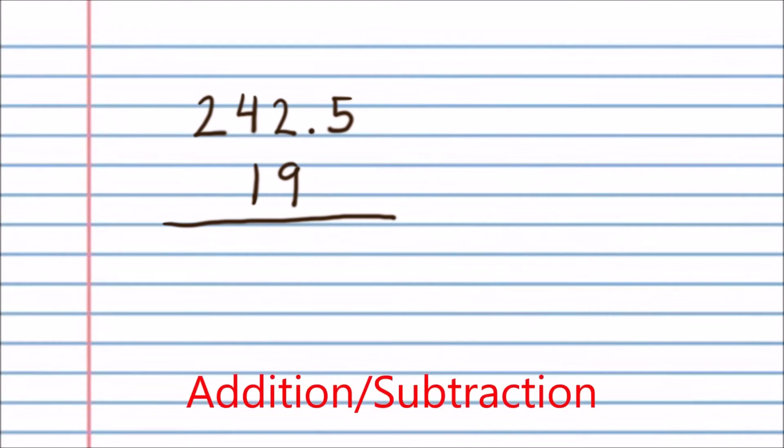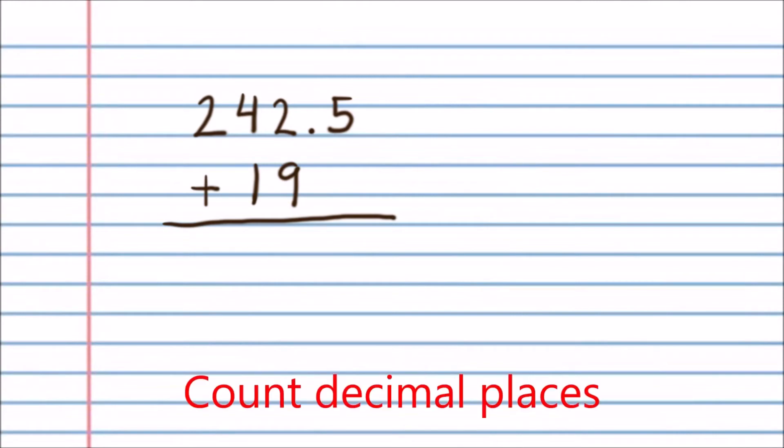When you want to add or subtract two numbers, the rule is different. Instead of counting up how many significant figures the two numbers have, you instead count up how many decimal places they have. So this first number has one decimal place, and the second number has zero decimal places, and that sets how many decimal places our final answer is allowed to have. So the final answer is only allowed to have zero decimal places. So plugging this into your calculator gives you this value, and then you want to round it off to have zero decimal places.